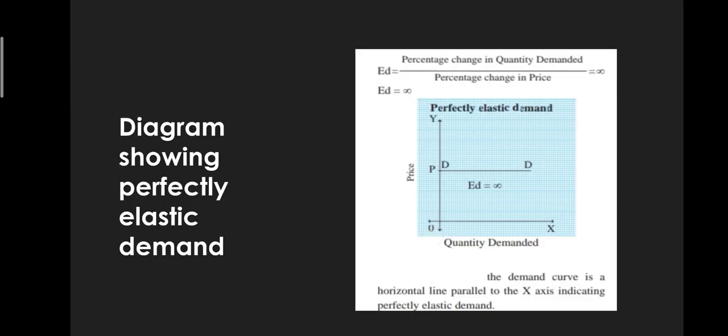Looking at the diagram: Ed = percentage change in quantity demanded / percentage change in price = infinite. On the OX axis we have quantity demanded and on the OY axis we have price. At price OP, the demand curve DD is parallel to the OX axis, which indicates that elasticity of demand equals infinite.